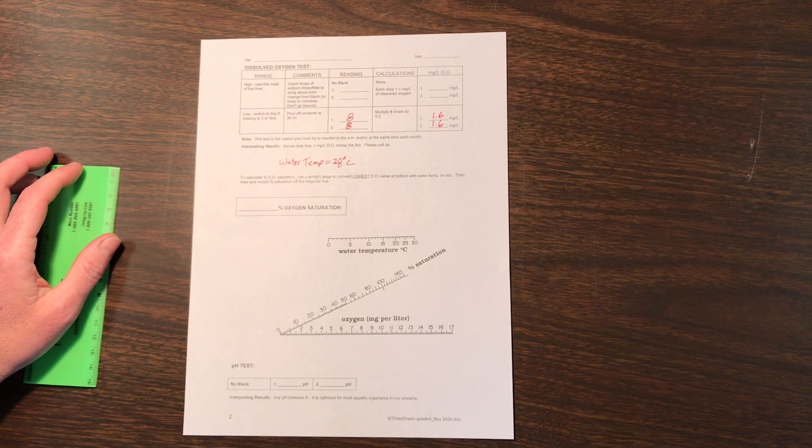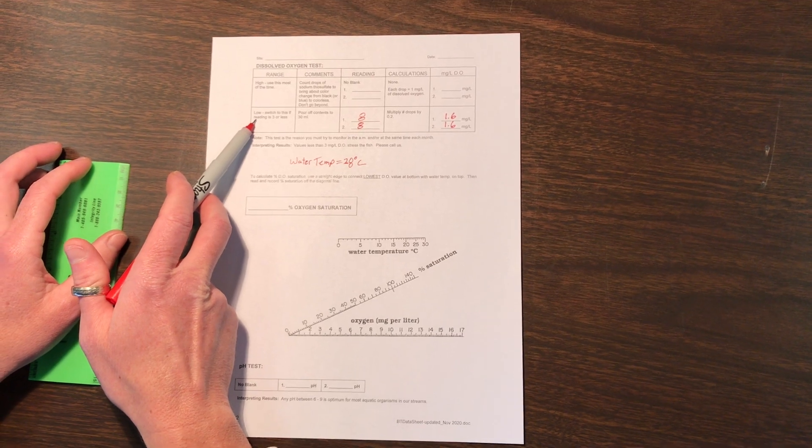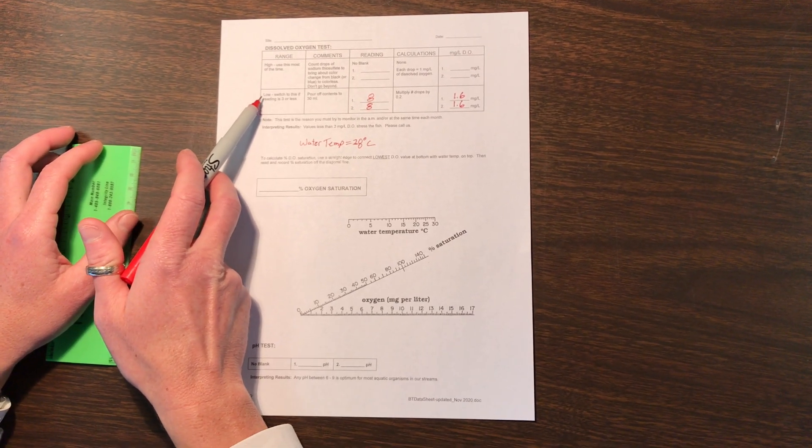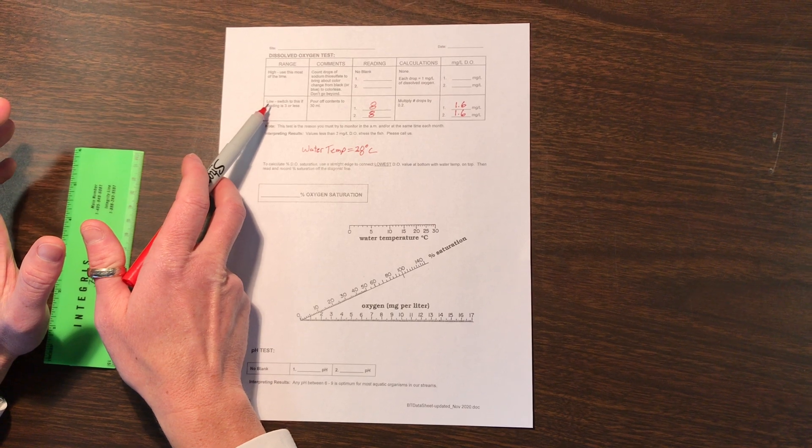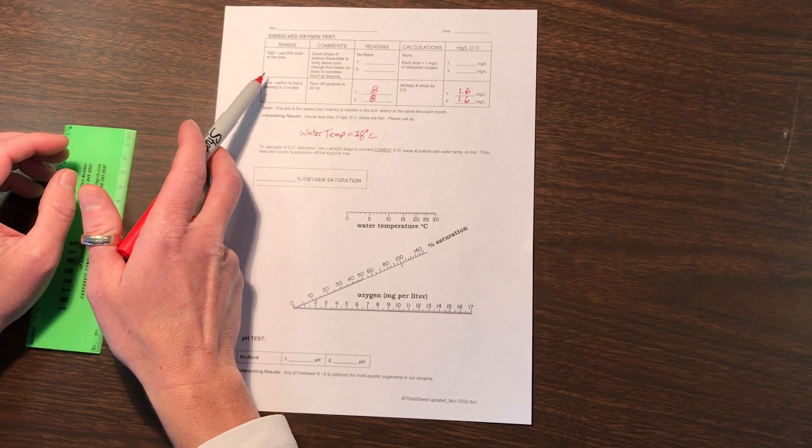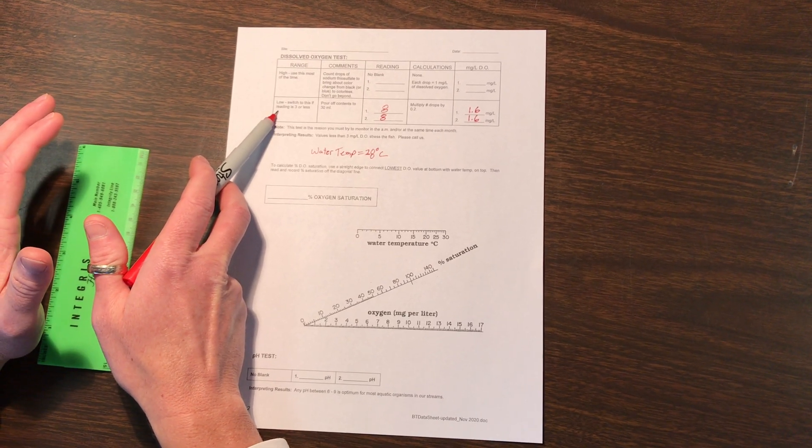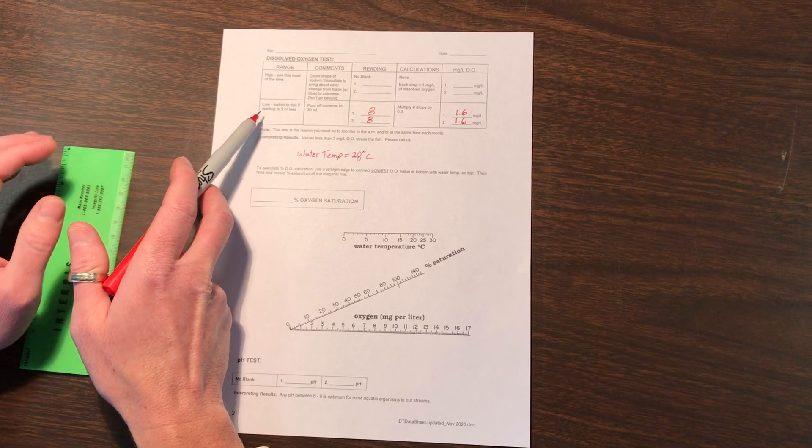This is a second scenario. If you are having to do the low range test of oxygen, that means if your dissolved oxygen bottles change within the first 3 drops of the sodium thiosulfate, then you will need to switch and do the low range test. Read through the instructions on that and or watch the video.